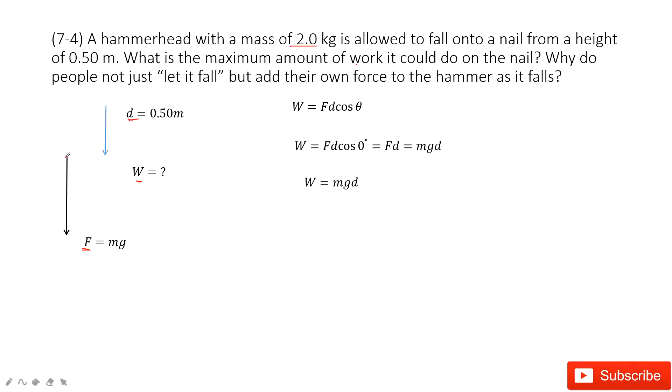This way we get W = Fd cos(0°), which becomes Fd. Since F is mg, the work must be mgd. Mass m is given, d is given, and g is the constant 9.8 meters per second squared, therefore we can calculate the work easily.